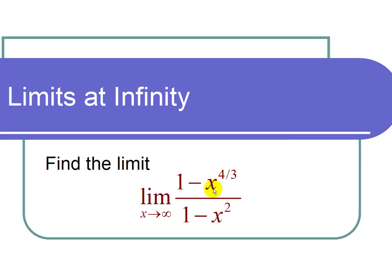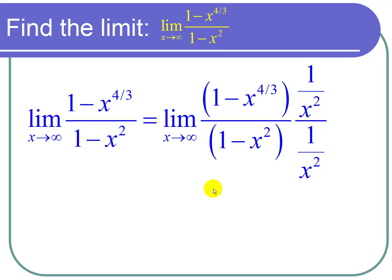And the algebra trick is we multiply the top and the bottom by 1 over the highest power of x. So notice among 4 thirds and 2, 2 is the higher power. So I multiply top and bottom by 1 over x squared.